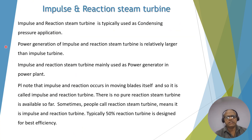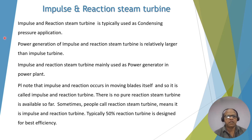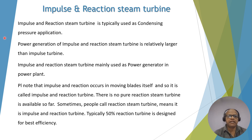Impulse and reaction turbine is typically used as a condensing pressure application. That means the outlet of steam is lower than atmospheric pressure and it is condensing. The power generation of impulse and reaction turbine is relatively larger than an impulse turbine alone, and this turbine is mainly used for power generation in power plants.